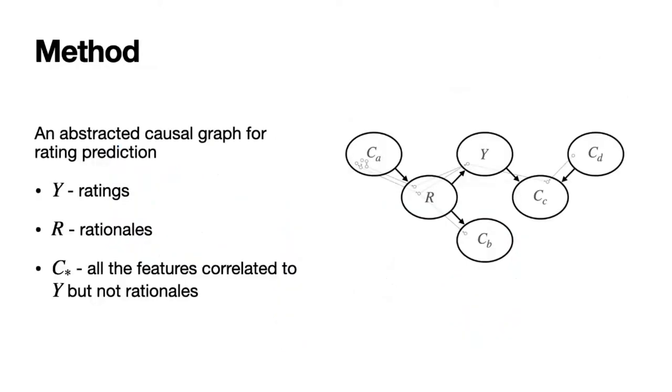Here we draw an abstracted causal graph for rating prediction task, where Y represents the ratings, R represents the rationales, and C sub-star represents all features correlated to Y but not rationales. Since the directed edge from R to Y denotes that R is the direct cause of Y, rational features should be more robust for prediction among different scenarios.